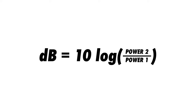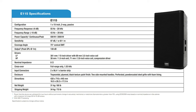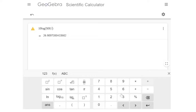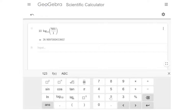I'll do an example with the QSC E115, but you can just plug in the numbers for your own speakers. The continuous power capacity for this speaker is 500 watts, meaning it can remain stable with 500 watts over an extended period — make sure not to confuse this with the peak power. Plugging in 1 watt as power one and 500 watts as power two, the ratio between them is about 27 dB. That means we'll get 27 dB greater sound pressure level with 500 watts than with one watt. Adding 27 dB to the 97 dB sensitivity spec, we can expect 124 dB SPL at 500 watts at one meter away from the speaker.